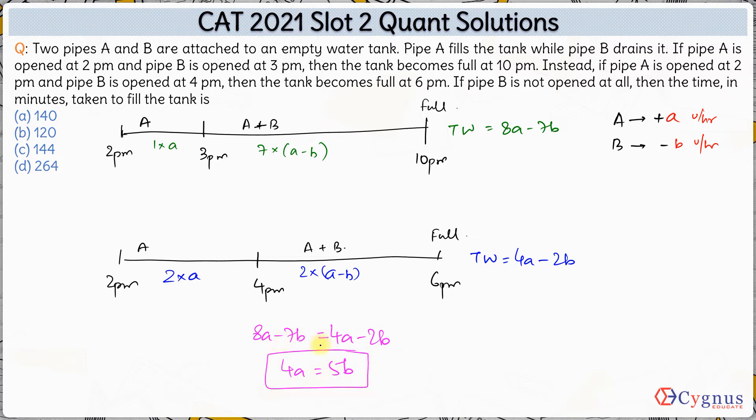Now let's calculate what is the actual total work to be done. So actual total work to be done is 4A minus 2B. And instead of B I can substitute this with 4A by 5. So this becomes 20 minus 8. This is 12A by 5. This is the total work that has to be done.